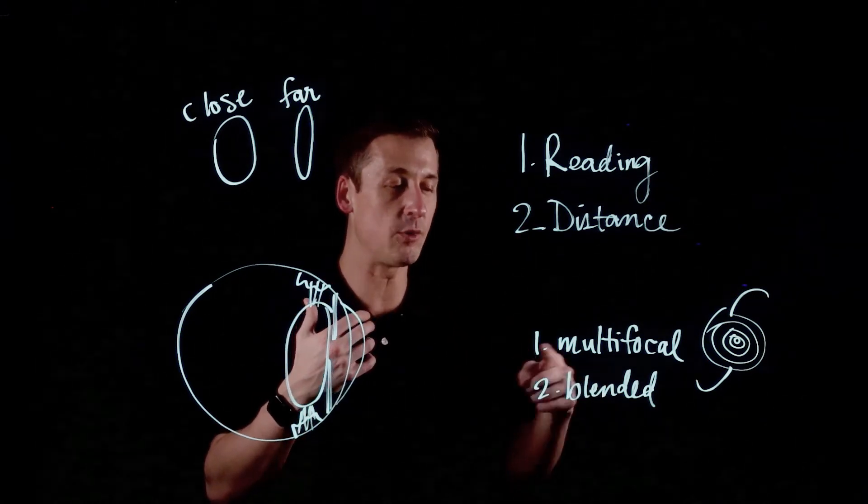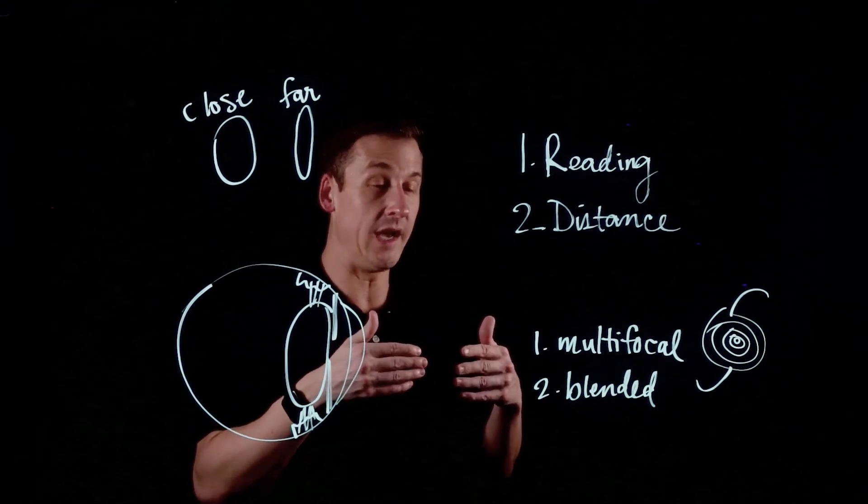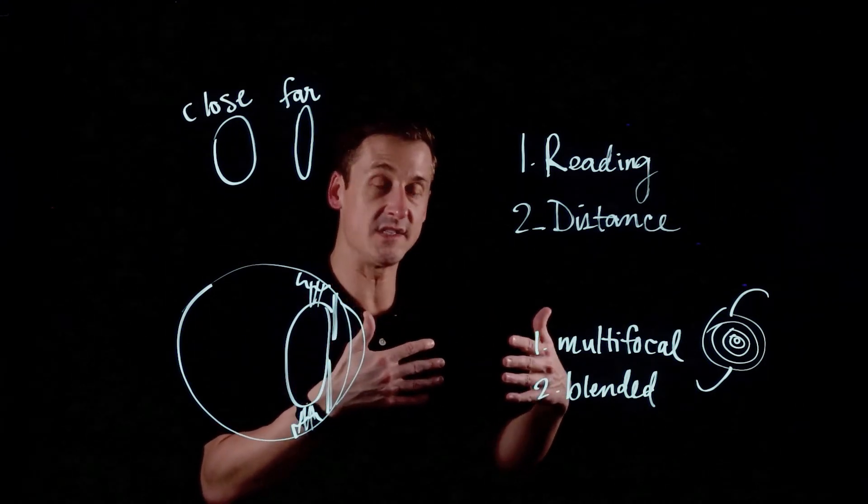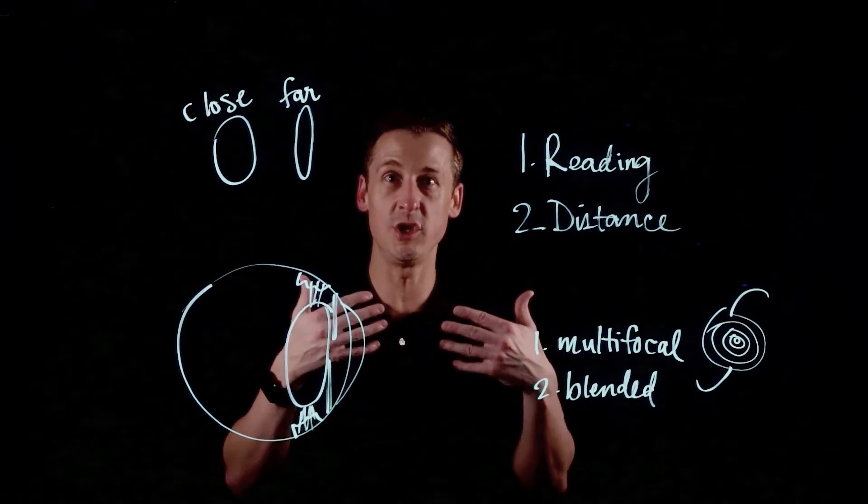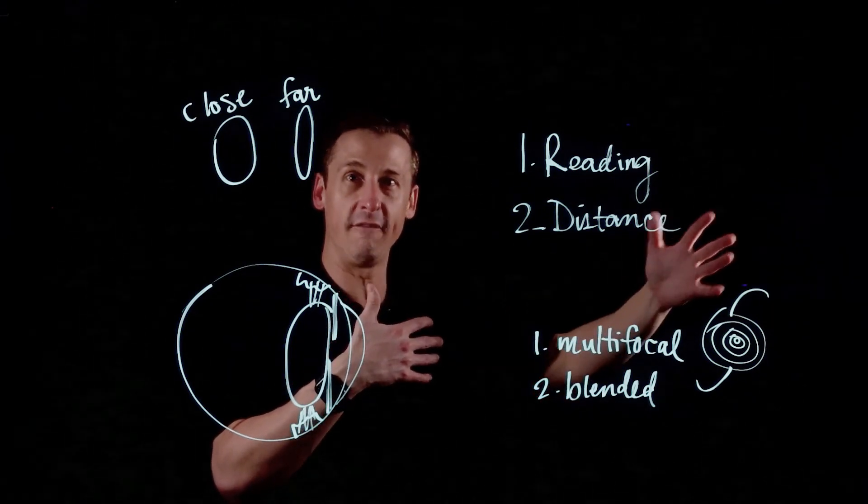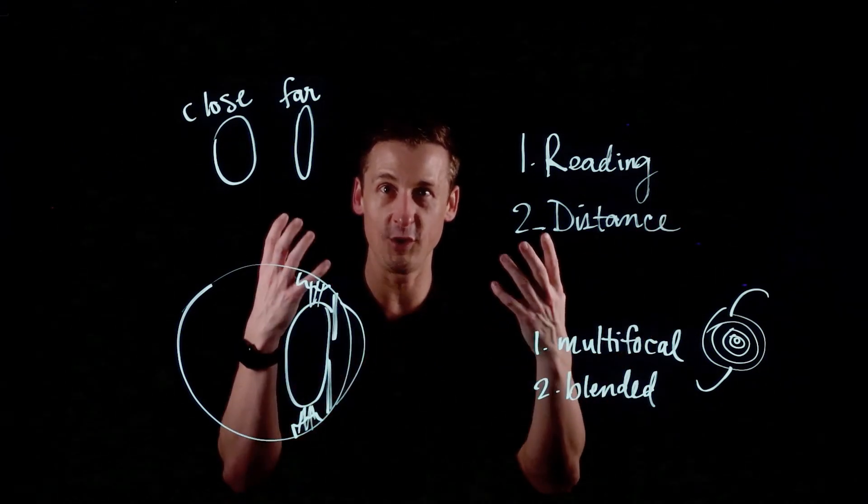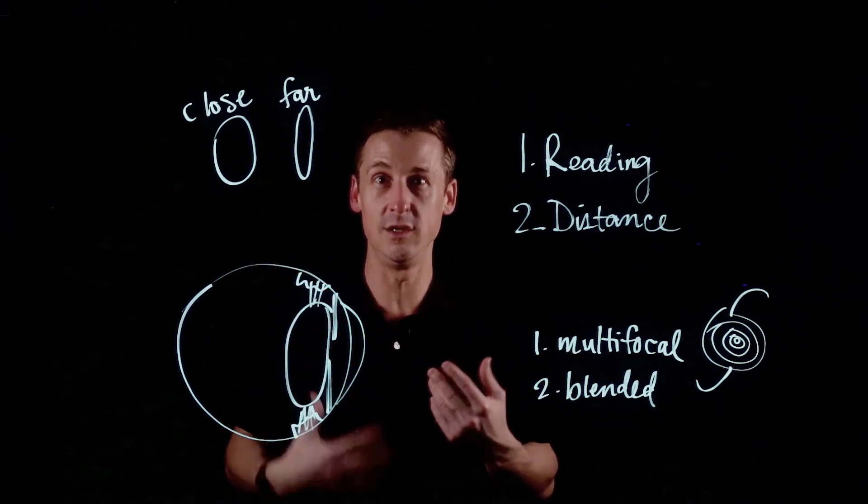That's the same way it works with our eyes. We want to use both eyes at the same time—that's how our brain was built. So with blended vision, you're taking advantage of that by having there be enough of a difference between the eyes that you have distance and near vision, but a small enough difference between the two eyes that you're using both of them at the same time. You're getting this depth of focus from distance to near because you're using the different signal coming into both eyes, just the same way that you use the different signal to get stereo sound.